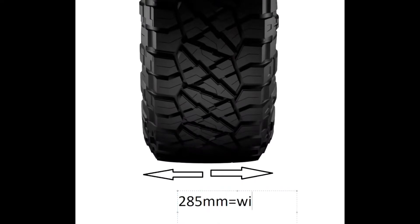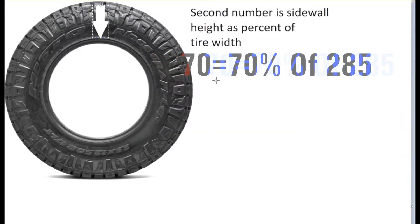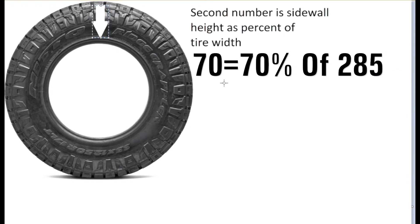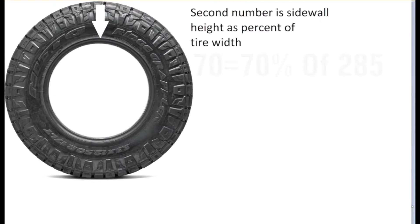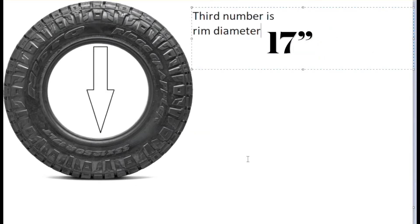The first number represents the width in millimeters. The second number is the aspect ratio, which means it's the percent of the width and that gives us the height of each sidewall. Basically, aspect ratio is a fancy way to say the second number tells us what percent of the first number is our sidewall height. The last number is the rim diameter.